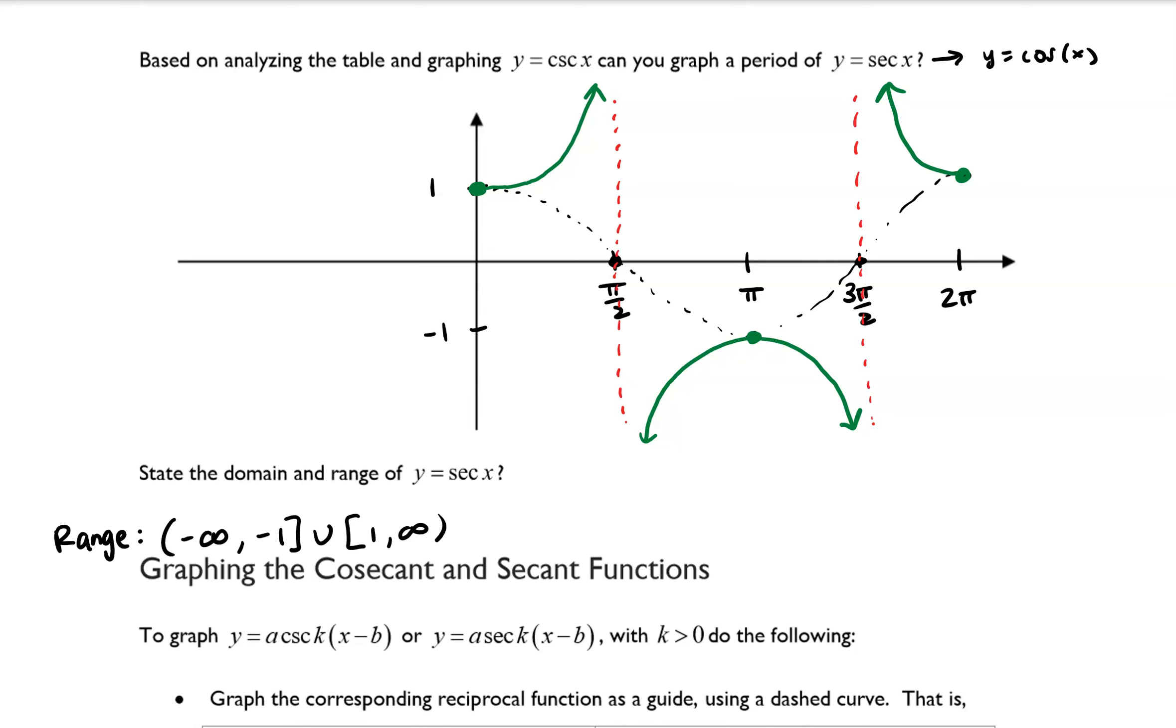However, the domain is going to be slightly different since the vertical asymptotes are at different locations than cosecant of x. And so if we were to write this out in a sentence, we could say all real numbers except, and you'll notice that there's a vertical asymptote at pi over 2, 3 pi over 2.